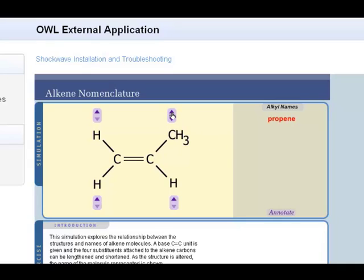Now notice this is propene, and there is no cis-trans isomers here. Now this is 1-butene, no cis-trans isomer.